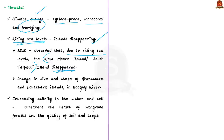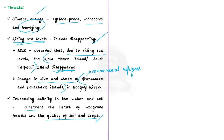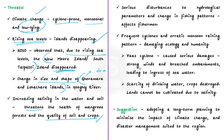In these islands, a few dozen houses and acres of land go underwater every year, forcing thousands of inhabitants to leave and become environmental refugees. Another threat is the increase in salinity in water and soil, which severely threatens the health of mangrove forests and the quality of soil and crops. There have also been serious disturbances to hydrological parameters and changes in fishing patterns, affecting fishermen. Frequent cyclones and erratic monsoon rain patterns are also damaging the ecology and the people of Sundarbans. The recent Yas cyclone caused serious damage to Sundarbans.